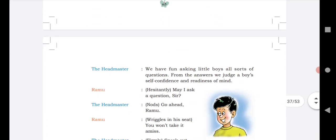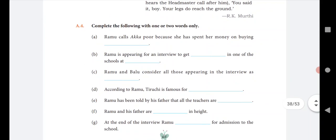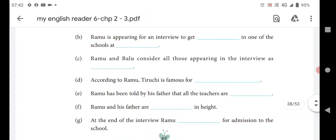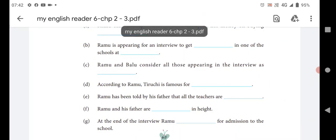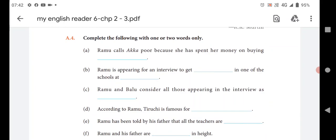As you can see on the screen, we have done this in previous videos. Now come to book work, this is page number 65 on your screen. See A for: complete the following with one or two words only. Ramu calls Akka poor because she has spent her money on buying. What is she going to buy? The correct answer is scarf.